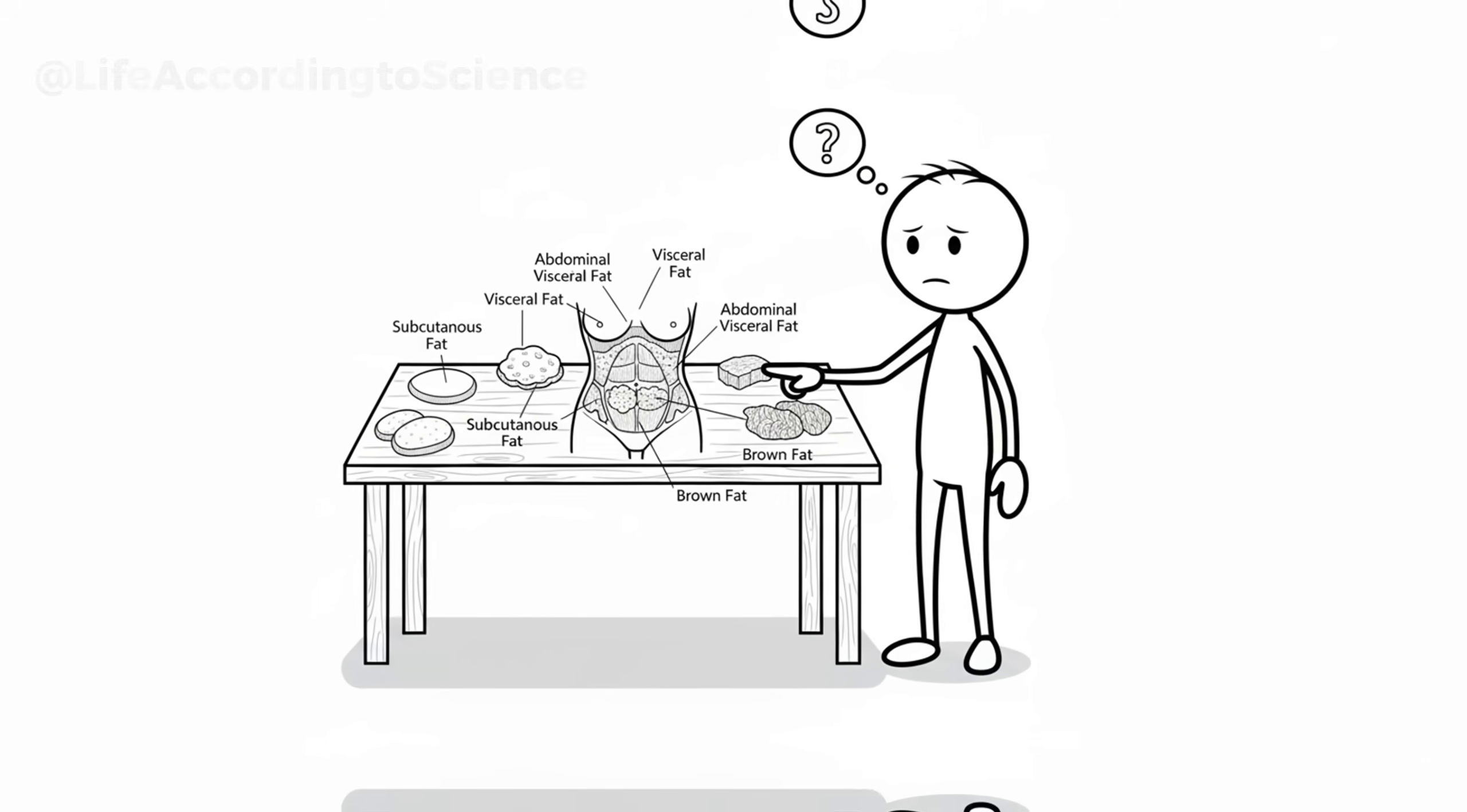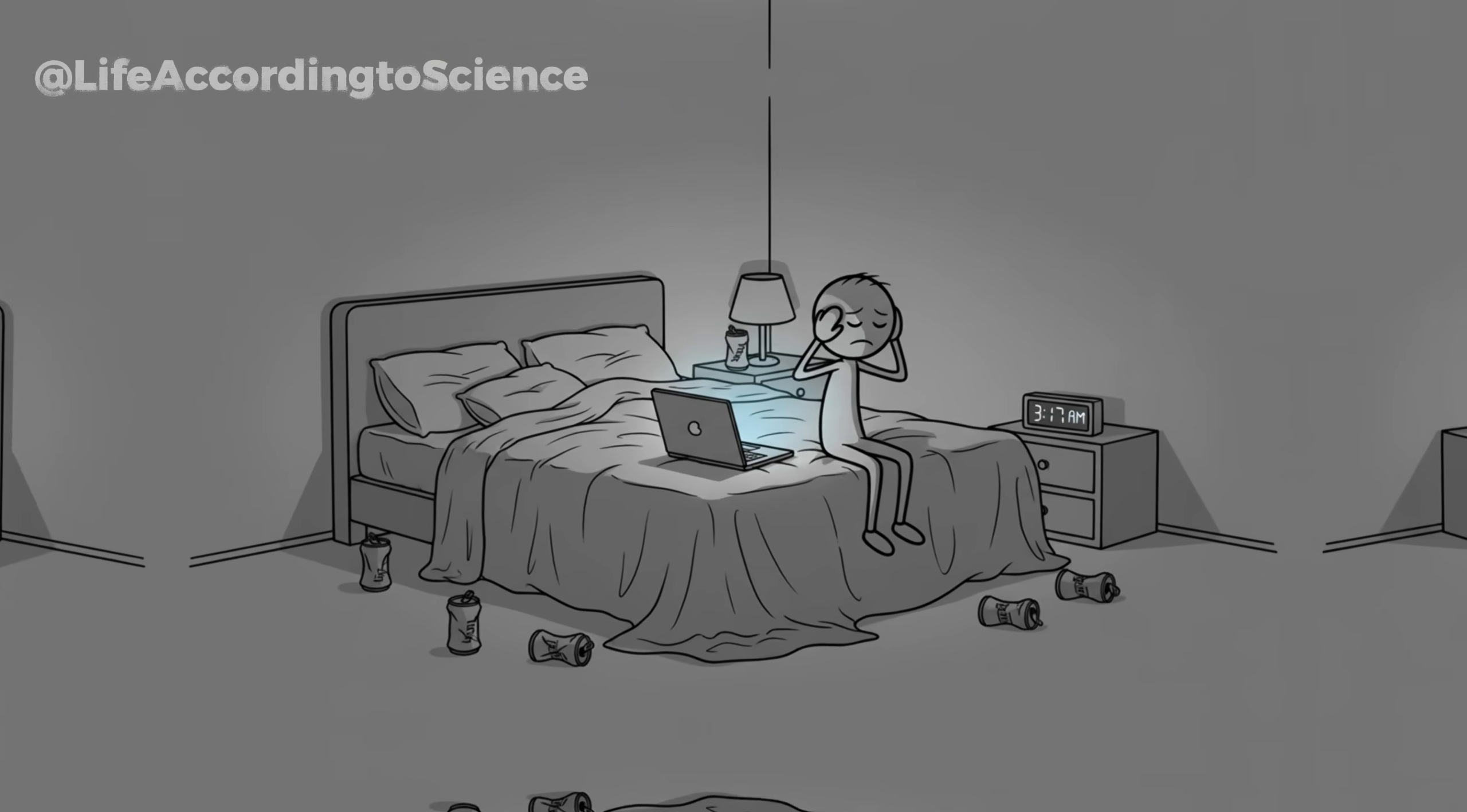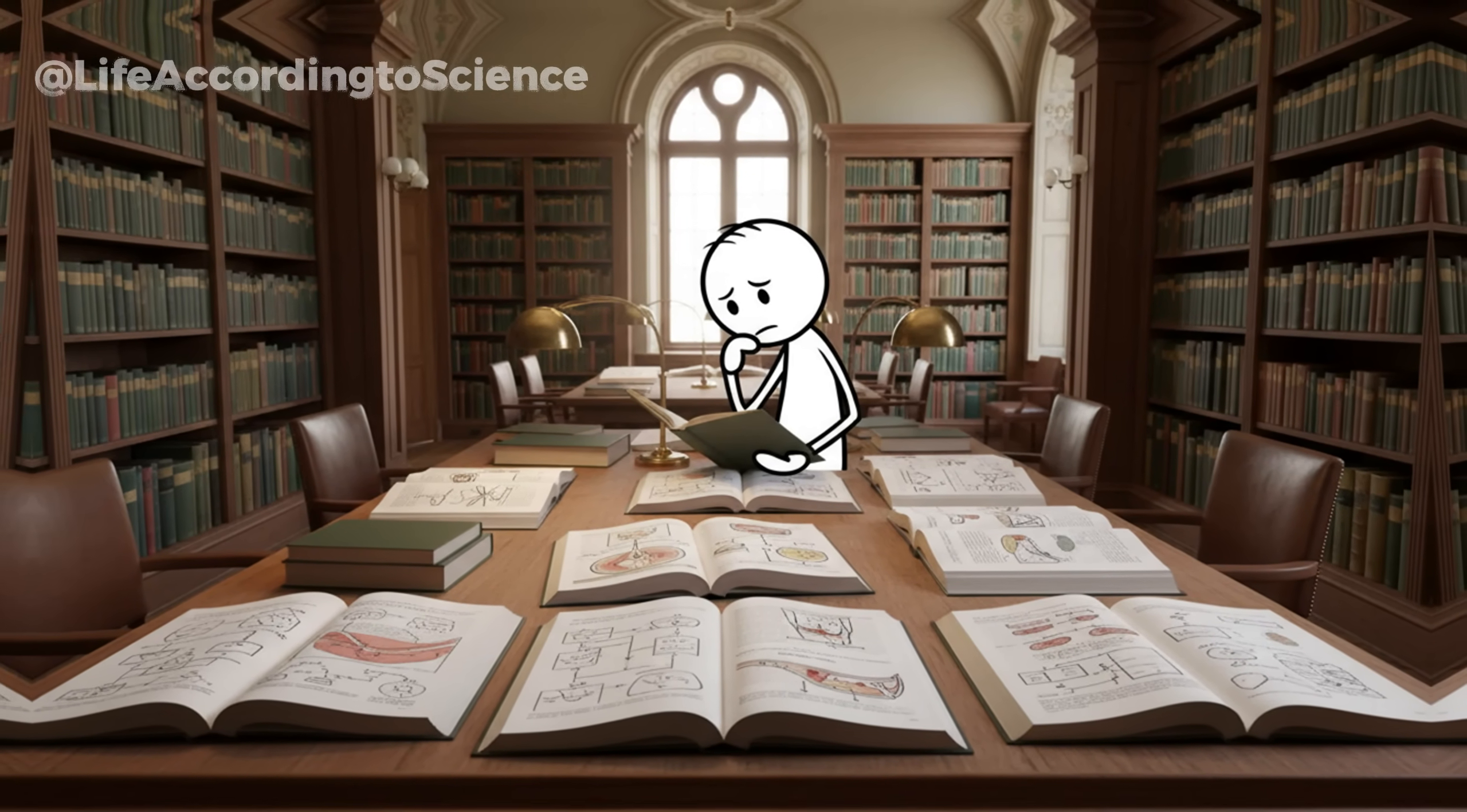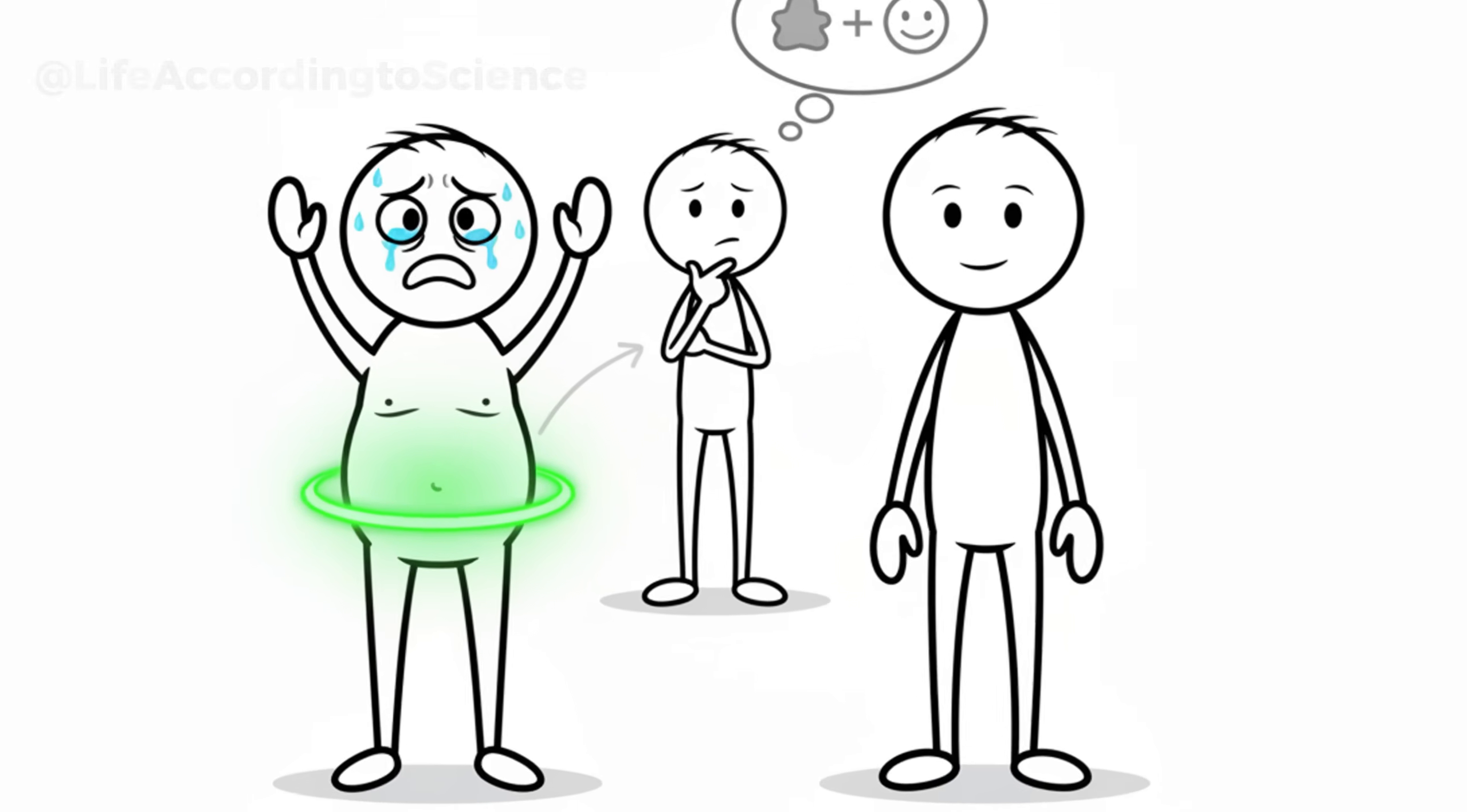When you're constantly under pressure, mentally, emotionally, or even from sleep deprivation, cortisol never gets the signal to shut off. That keeps your blood sugar high, your appetite uncontrollable, and your fat cells in storage mode. A 2014 study from Yale University found that people with chronic stress had significantly more visceral fat, even if their total body weight was normal. The culprit wasn't overeating. It was the body's hormonal response to stress. This means that your belly might not be growing because of what you eat, but because of how you feel.